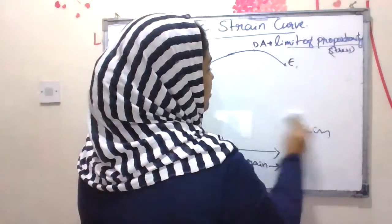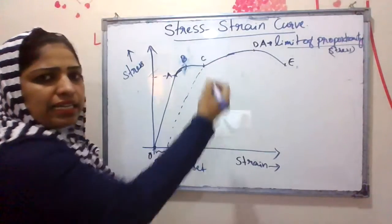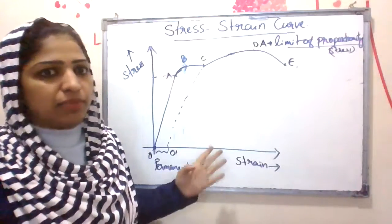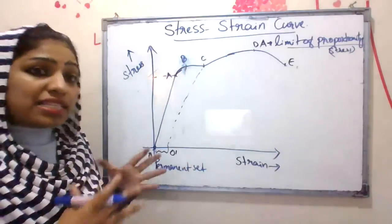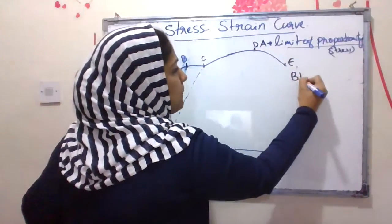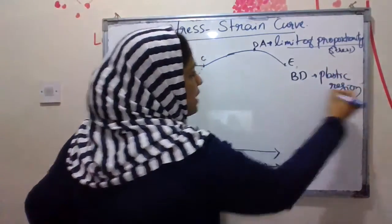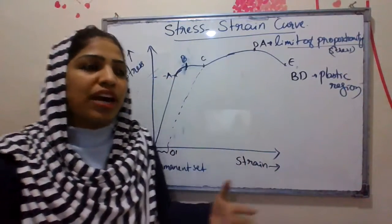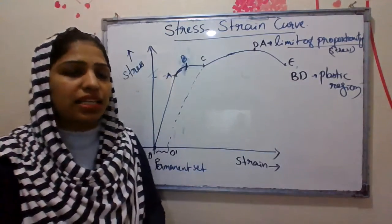From C to D, there is a huge increase in strain for a slight increase in stress. The region O to B is the elastic region, and the region B to D is the plastic region. When stress exceeds the elastic limit, the object has a permanent deformation and will not return to its original configuration.